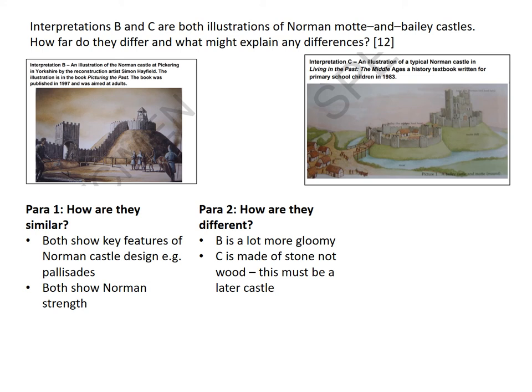But the pictures are quite different. B is a lot more gloomy and terrifying than C. C shows quite a different castle from B — C is made of stone, not wood. Using my own knowledge, I know that must be a later castle because the initial Norman castles were made of wood. Also, in B I cannot see the full bailey — I can mostly only see the motte. And again, I know that isn't surprising because some of those initial Norman castles were only the motte; they weren't always a motte and bailey. Notice that I'm using the phrase 'this is not surprising' — it's a really important phrase in this 12-mark question because it allows you to bring in your own knowledge, which is super important.